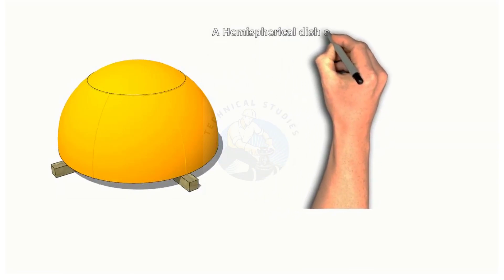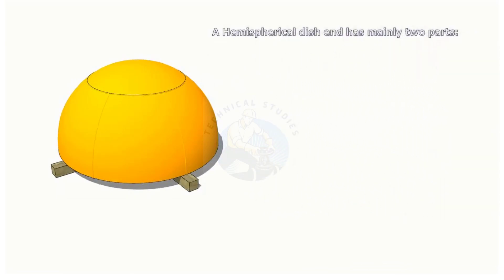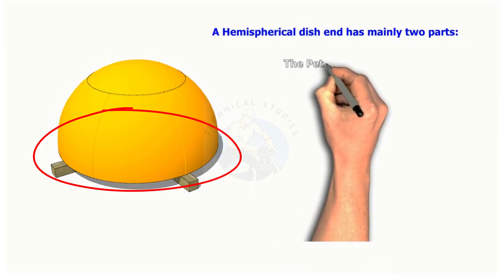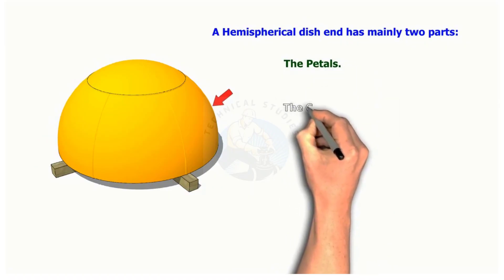A hemispherical dish head has two parts: the petals and the crown.